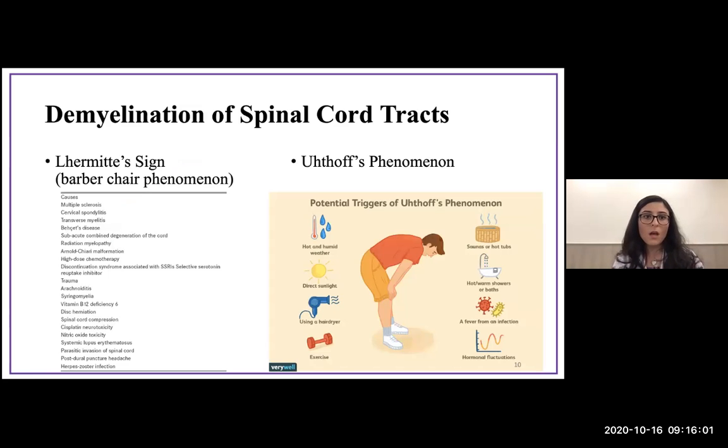There are certain signs associated with multiple sclerosis—they're sensitive but not specific. Lhermitte's sign or barber chair phenomenon: patients experience a shock-like or electricity-like pain, a shooting pain once they flex their necks, and this pain goes down to their arms, back, and legs. There's Uhthoff's phenomenon, characterized by reversible exacerbation of signs and symptoms with anything involving heat—hot or humid weather, sunlight, hair dryers, exercise, hot tubs, hot baths, infections, and hormonal fluctuations.